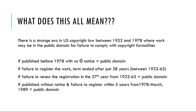What does this all mean? There is a strange era in United States Copyright Law between 1923 and 1978 where a work may be in the public domain for failure to comply with copyright formalities. In summary, if a work was published before 1978 with no copyright notice, it could be in the public domain. If there was a failure to register the work during the first term, then there was no ability to renew, and the term would end after just 28 years between 1923 and 1963. If you filed the work with the Copyright Office for registration but failed to renew the registration in the 27th year from 1923 to 1963, then after the 28th year the work would fall into the public domain.